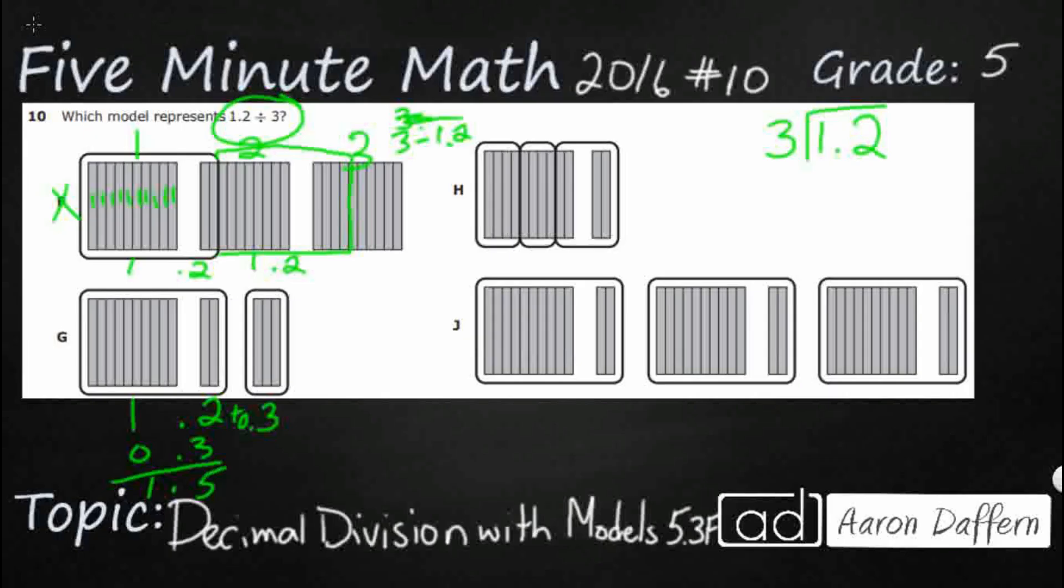But that's—so we got 1.5, because this is your one right here, and this is your half, your 0.5 right here. But obviously, that's not what we're looking for. We're looking for 1.2, or 1 and 2 tenths, divided into 3 chunks.